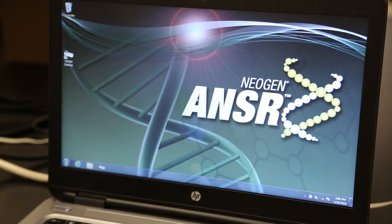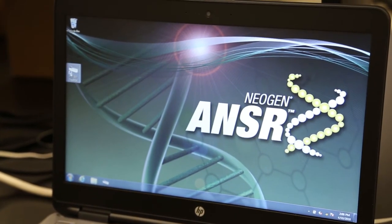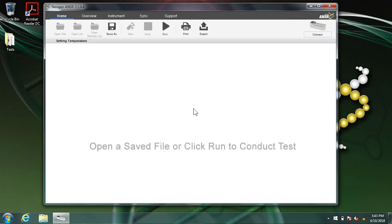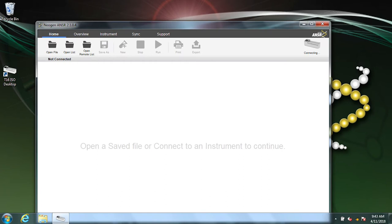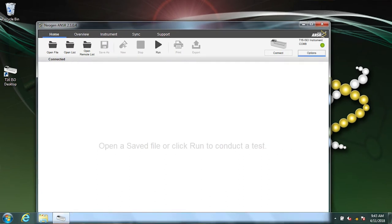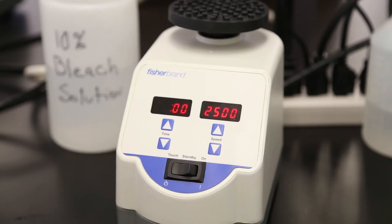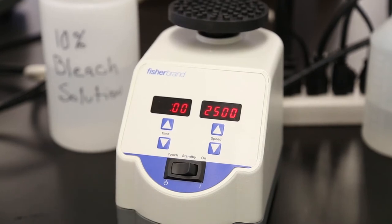Turn on the laptop and double-click the T16 ISO desktop icon. In the upper right-hand corner, click Connect. A dialog box will appear. Click Connect next to one instrument available. It takes a moment for the computer and reader to connect. When they do, a new menu appears, as well as a green light in the upper right corner of the screen. Now, make sure that the vortex is plugged in and turned on.